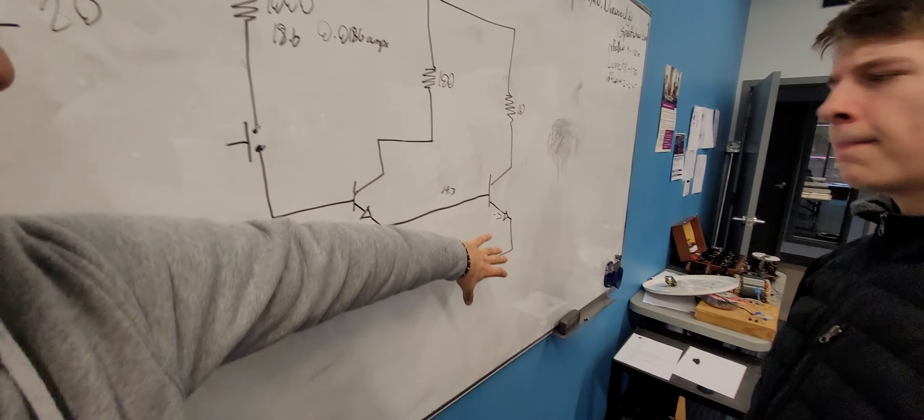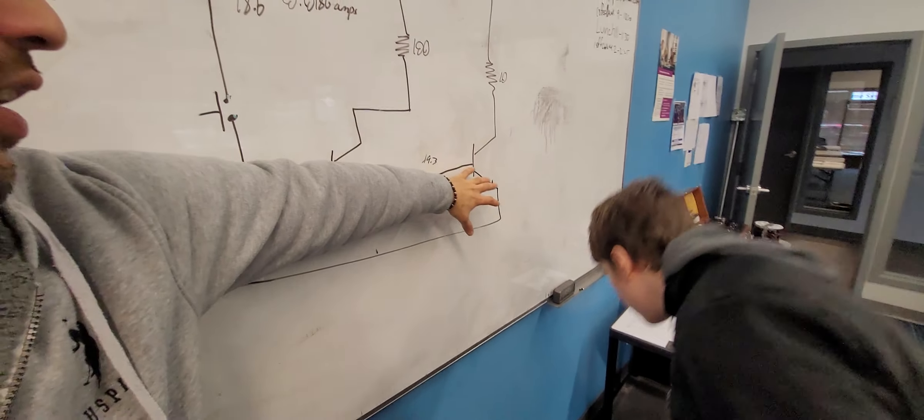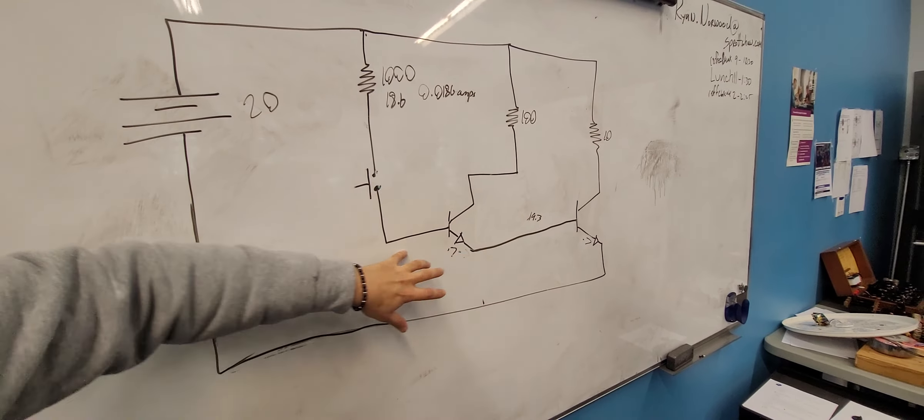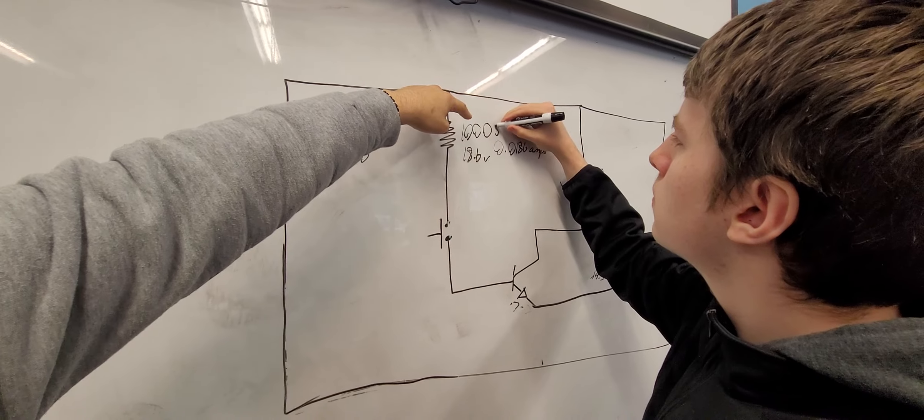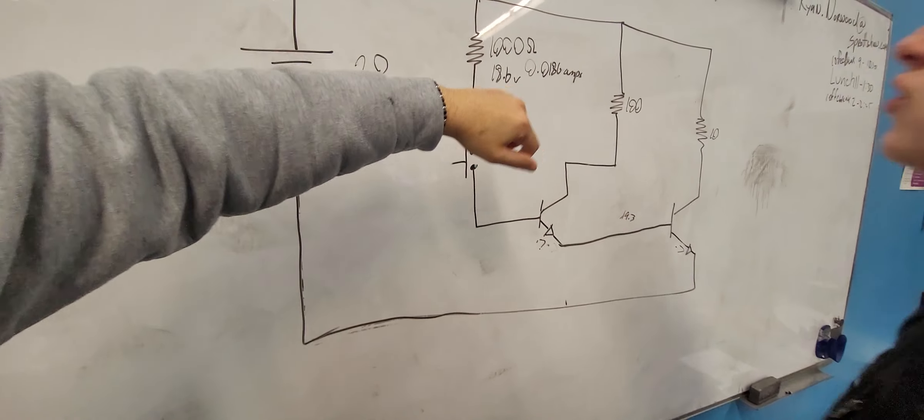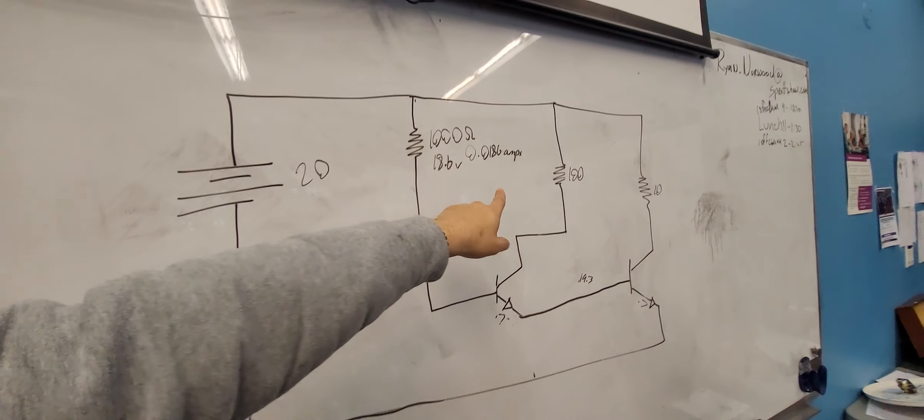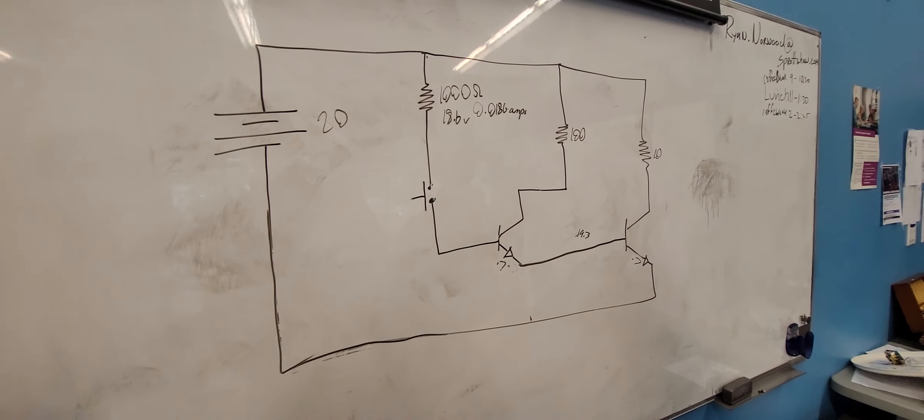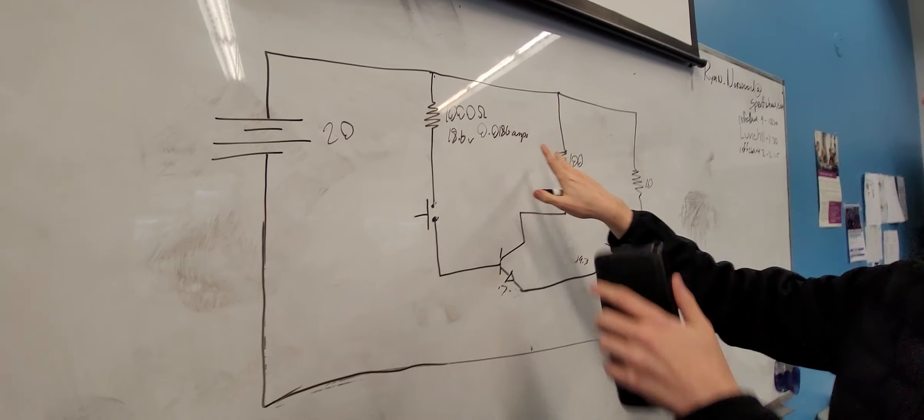Current flowing this way comes through here. You've got your 20 volts, minus 0.7, comes through here, minus 0.7. Come up here, we've got 18.6 volts, and we have our 1,000 ohms. 18.6 divided by 1,000 ohms gives us 0.0186 amps. So now we've got our amps running through here. That's our amps, right?